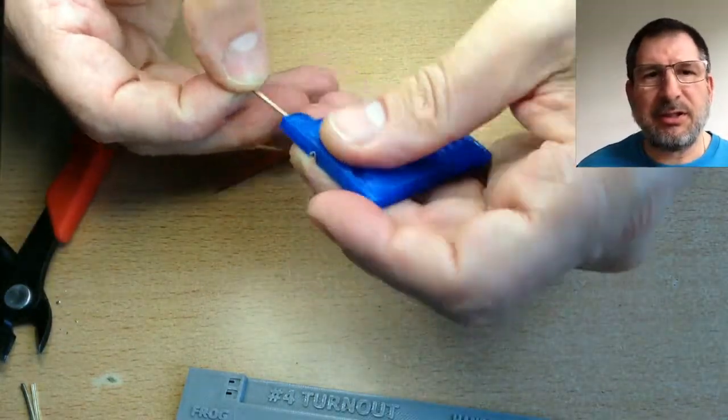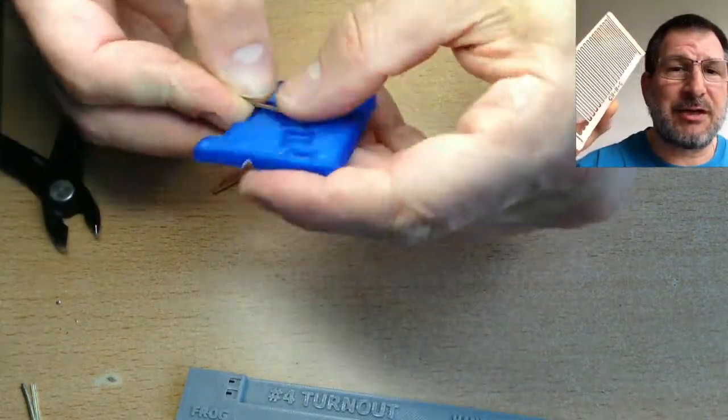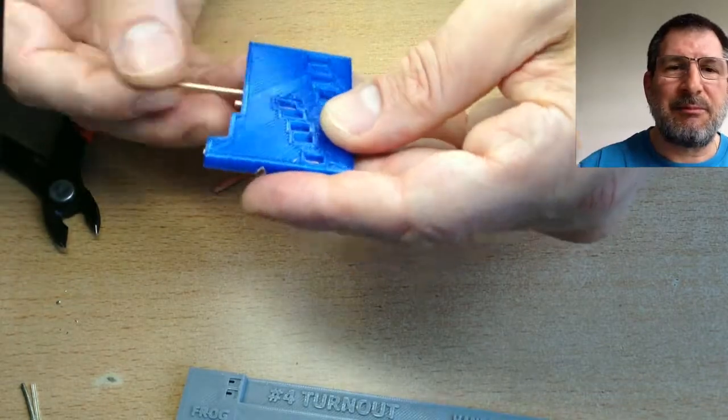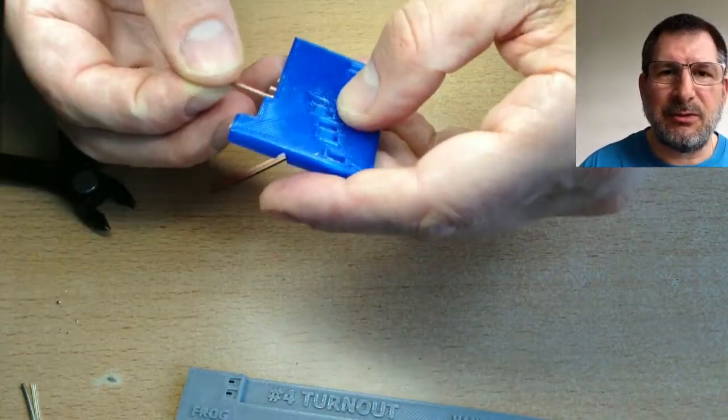What I'm doing is I'm using the Fast-Tracks ties as a pre-cut at this point. I haven't started cutting mine from my own copper blank yet. By putting that into the jig, you can line up the proper length and then snip it to length.